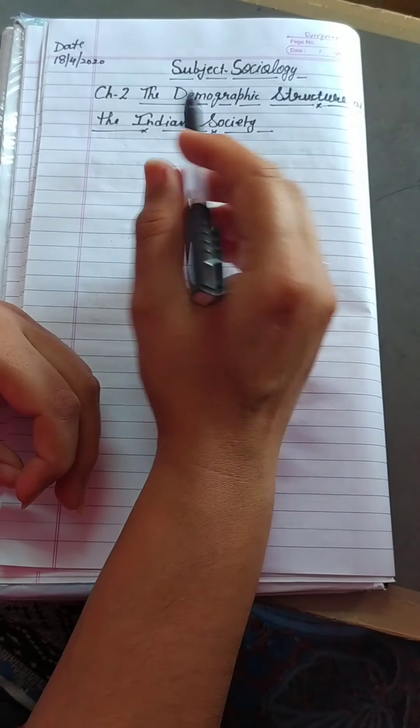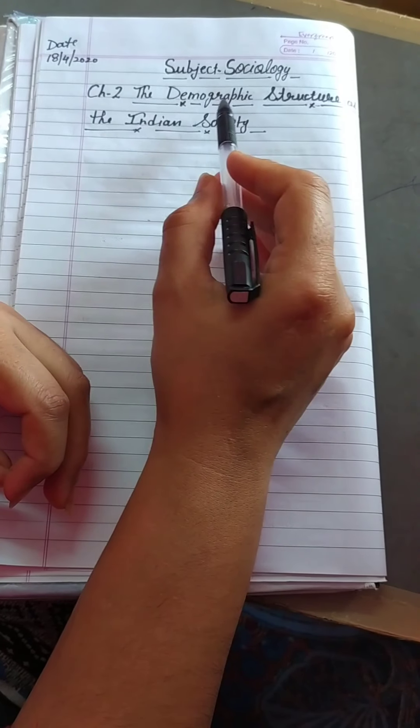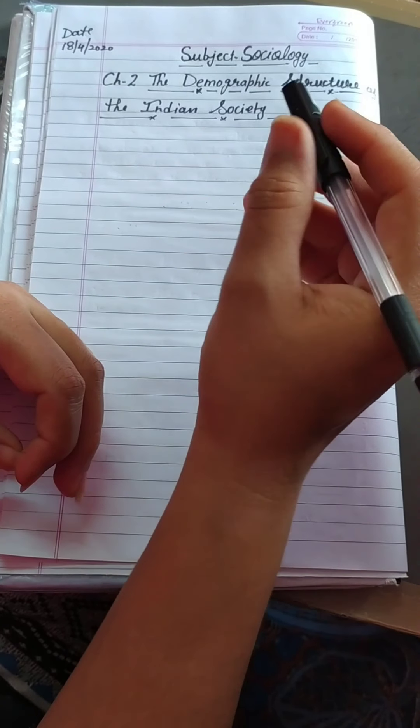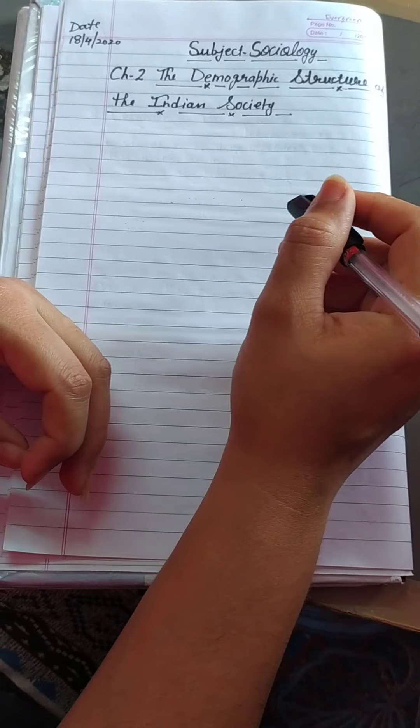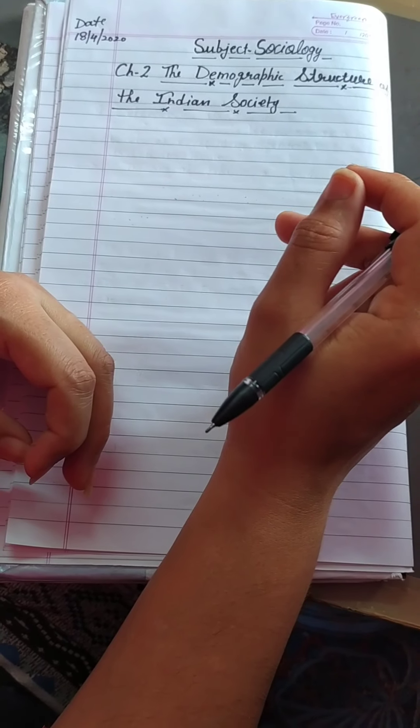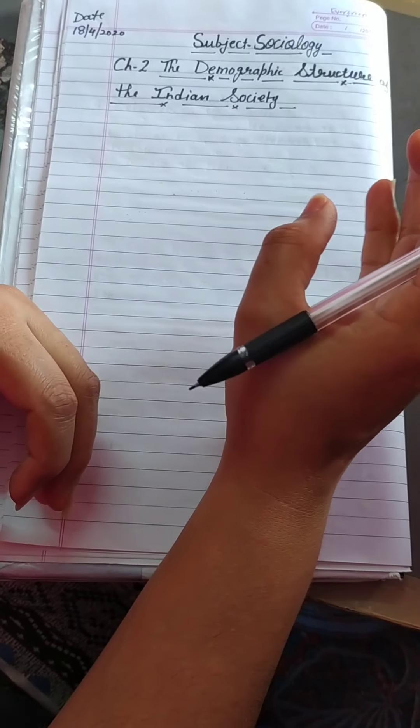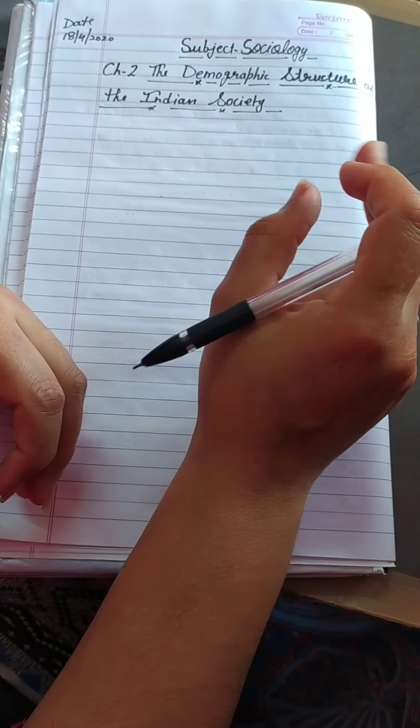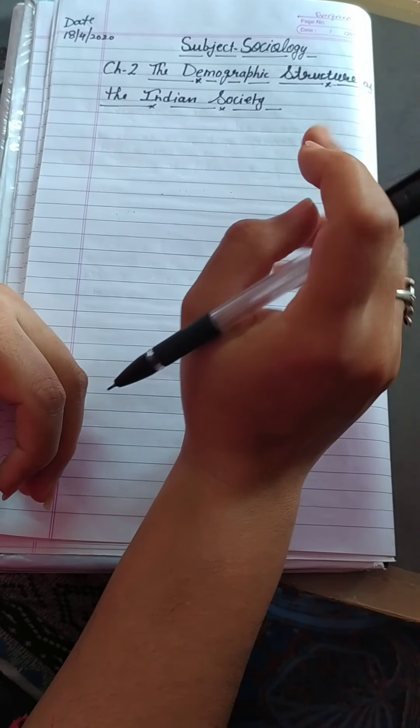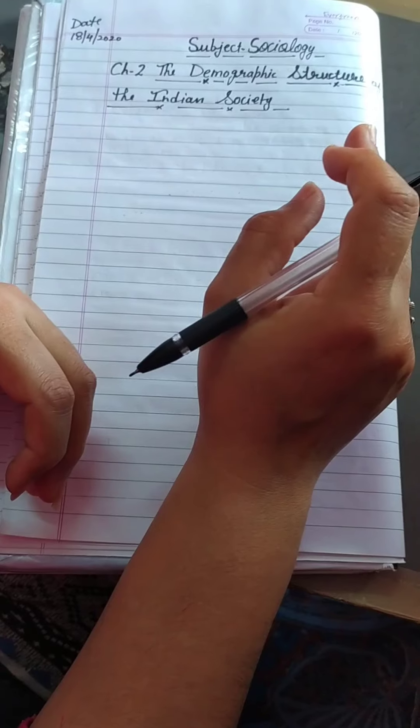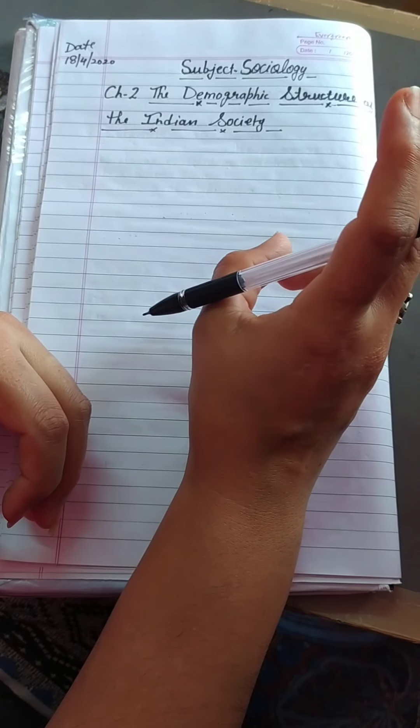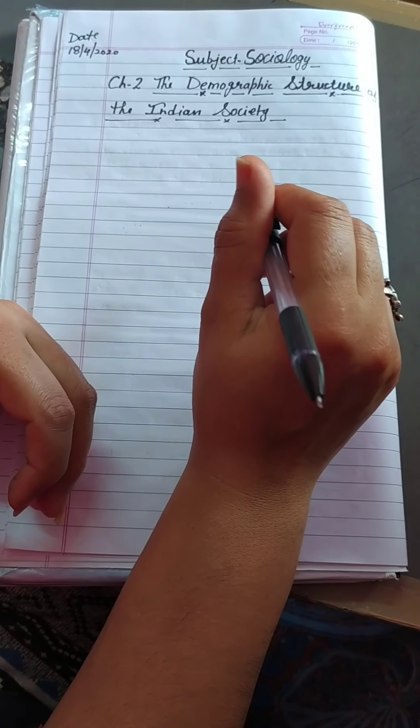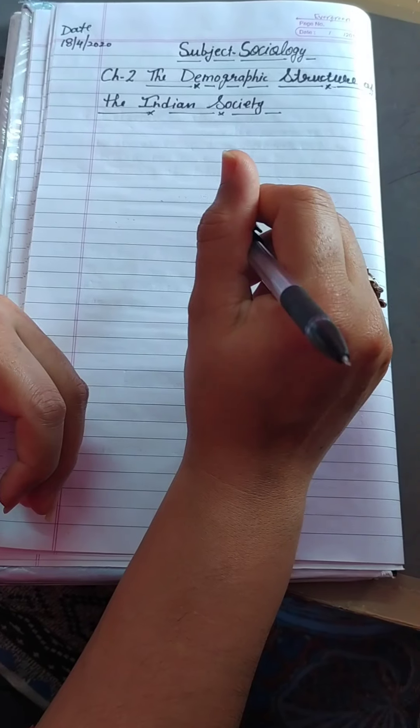Today we are going to start the new chapter, Chapter 2, The Demographic Structure of the Indian Society. In this chapter, as you know, India is the second most populous country in the world. So this chapter tries to tackle some questions like: What are the ways in which sociologists and demographers study a population? Which social aspects of the population are significant? And is our population simply an obstacle to development or does it help in development? So, we start the chapter.